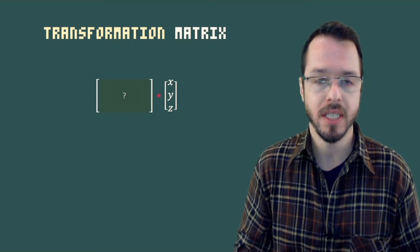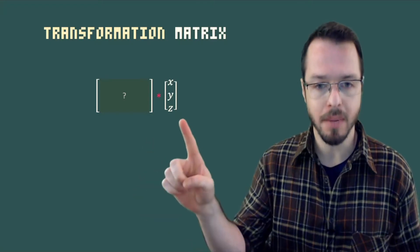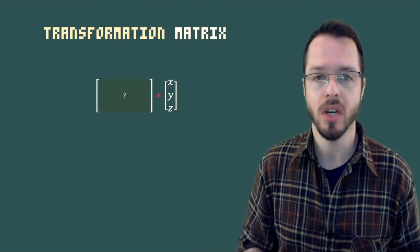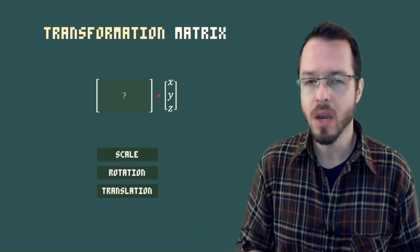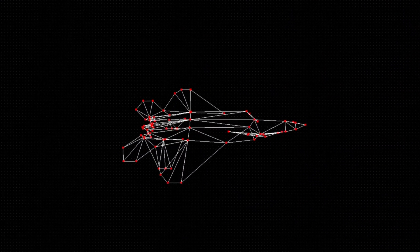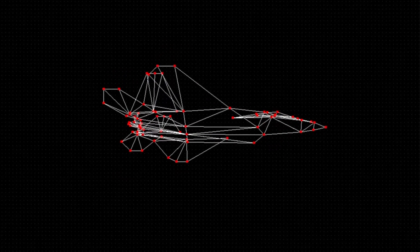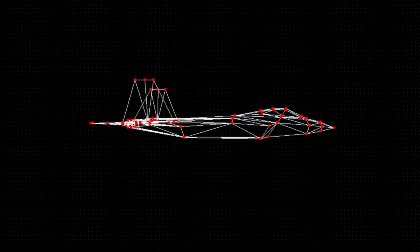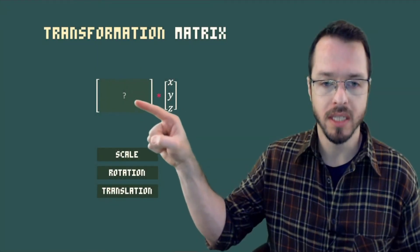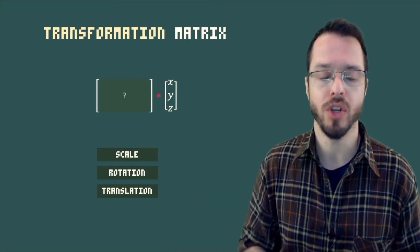We use in computer graphics these ideas of matrices. In our course we've been seeing that we use a matrix, we multiply it by our original points and vectors, and that multiplication lets us scale those vectors, rotate things, translate them around. All these transformations on our original points happen by multiplying a matrix.